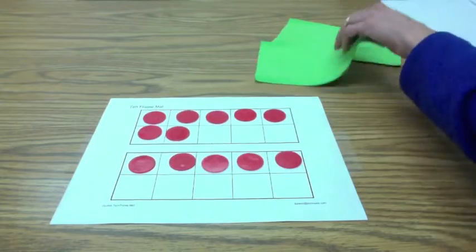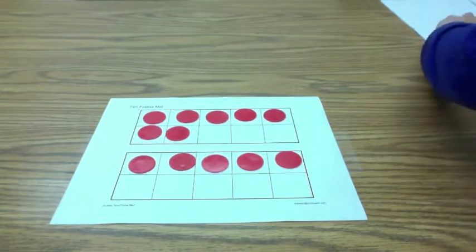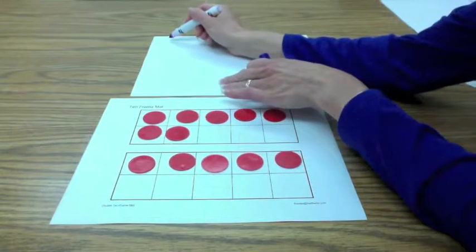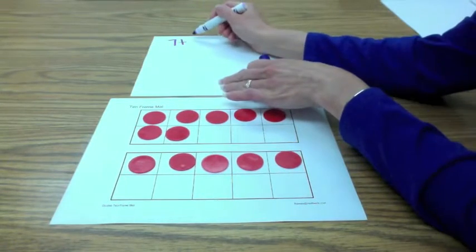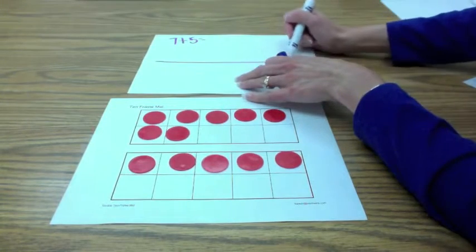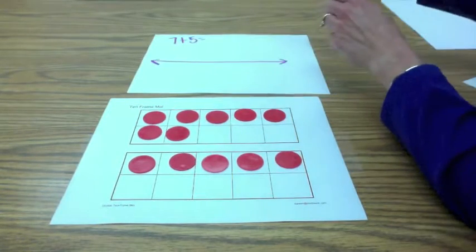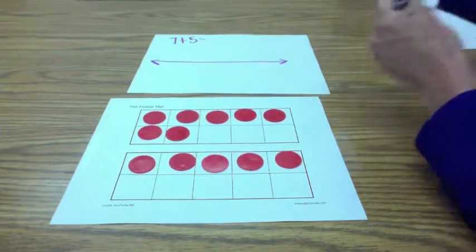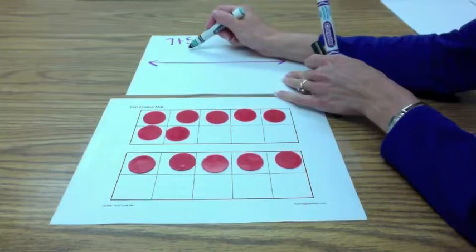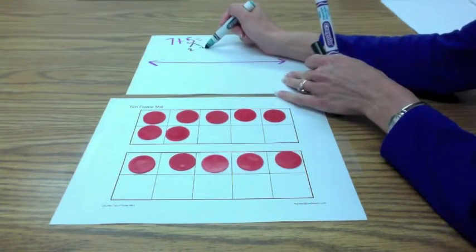After kids are able to verbalize that, then we can also record that on paper. So your problem was 7 plus 5. And which number did you break apart? I broke apart the 5. And how did you break it apart? I broke it apart into a 2 and a 3.